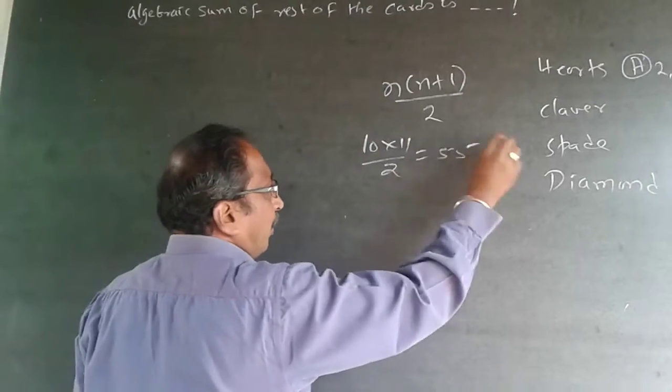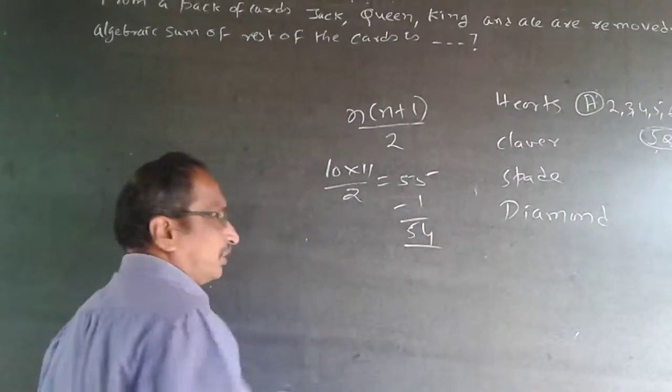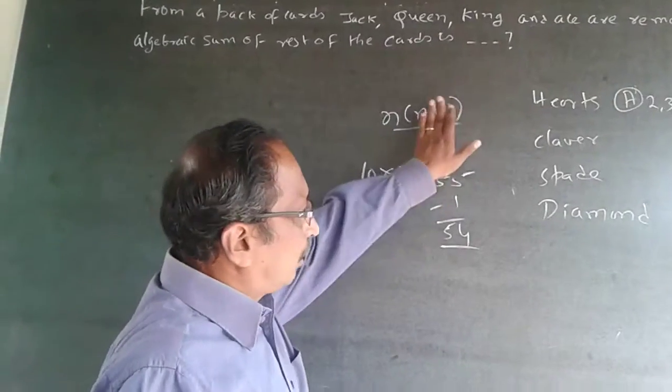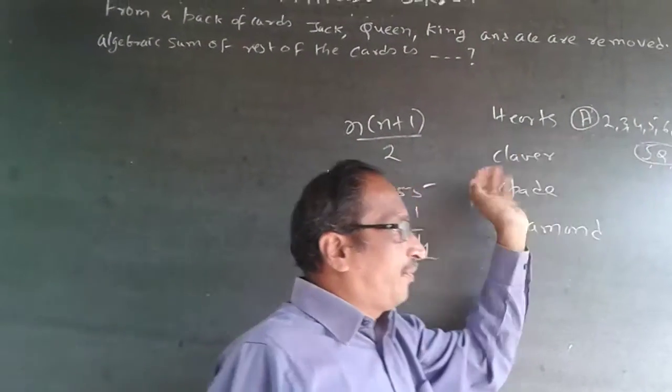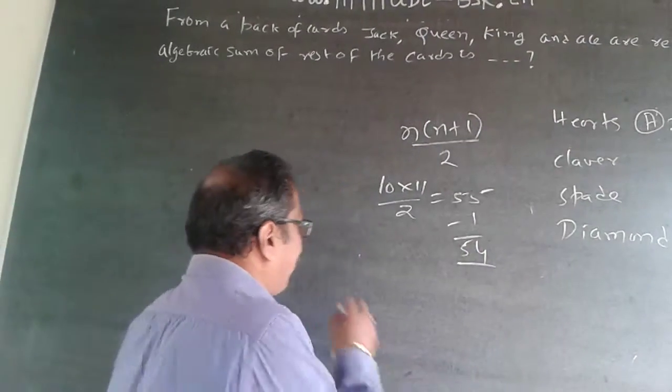It will be 55. Because 1 is not here, minus 1, the sum will be 54. The easy way of doing it - so sum of 10 numbers will be 55, because 1 is not there, minus 1 will be 54.